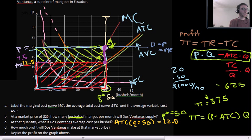How many bushels do they sell? They sell 50 bushels. So our profit then is going to be this rectangle here. It's going to be 7.5 times 50, which again is $375. Part E says depict the profit on the graph above. We've done that quite a bit. We have profit here. Look at all that profit.